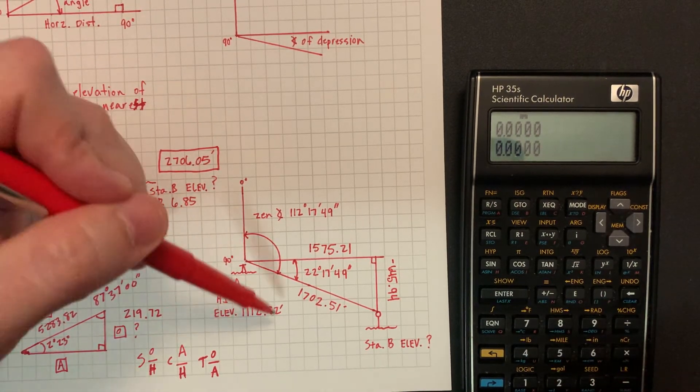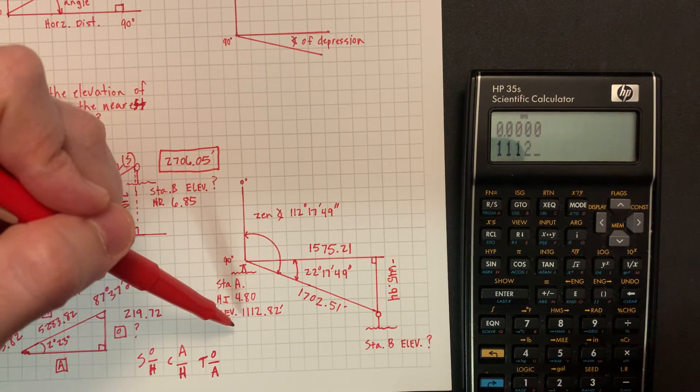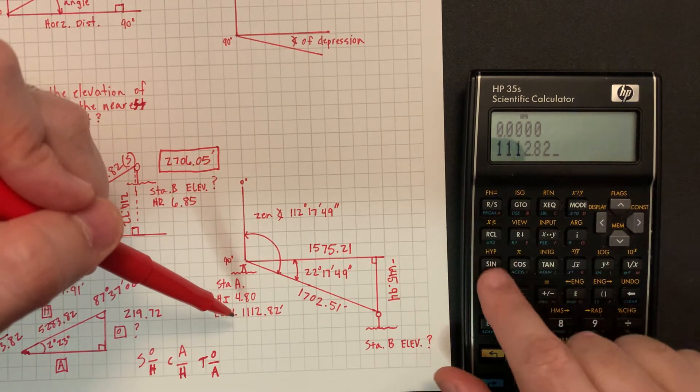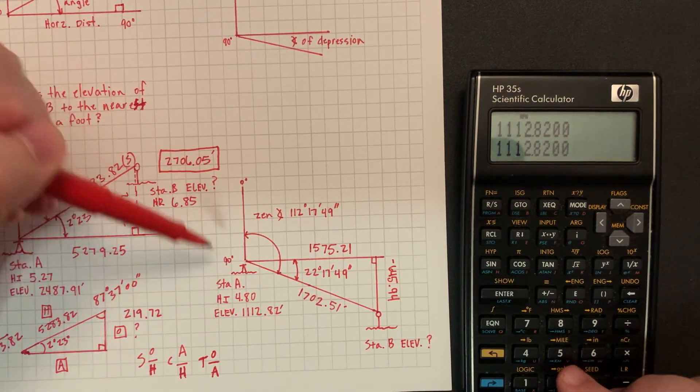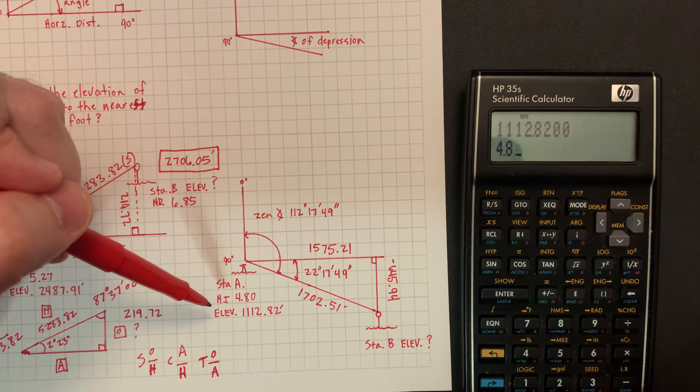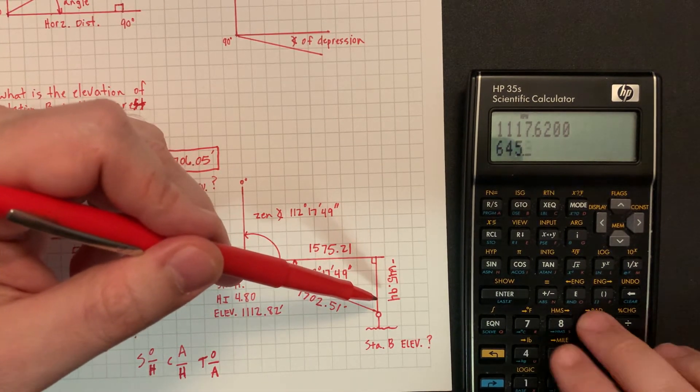Station elevation will be 1112.82 plus HI 4.8, plus we're going to subtract this time 645.94.